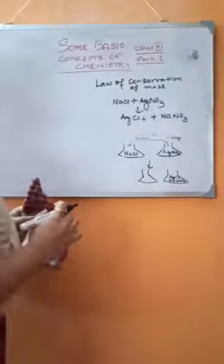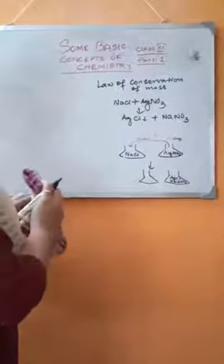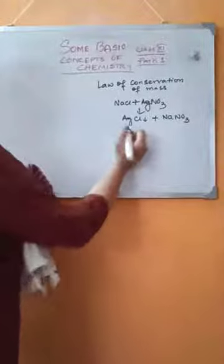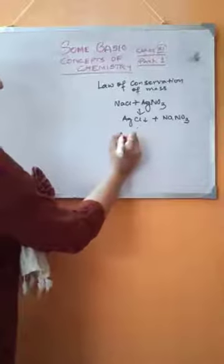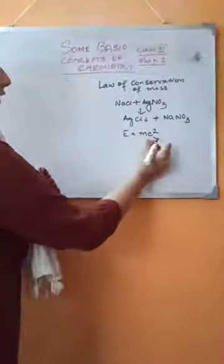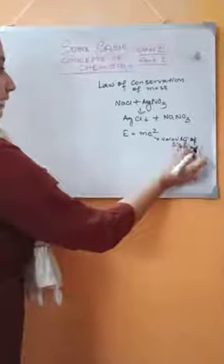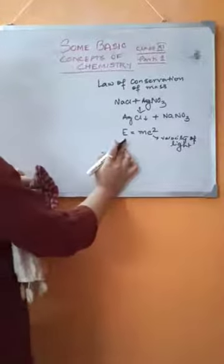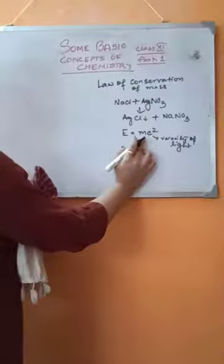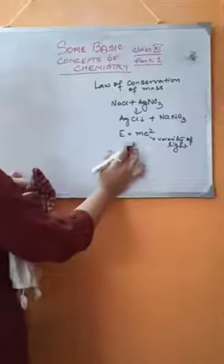Now, one important thing is that the law of conservation of mass is modified. According to Einstein's theory of relativity, mass and energy are interconvertible. From Einstein's equation E = mc², where C is the velocity of light and M is the mass, if we put the mass of any reactant, product, or any body, we will get the energy released. So energy and mass are interconvertible.